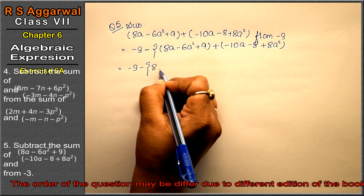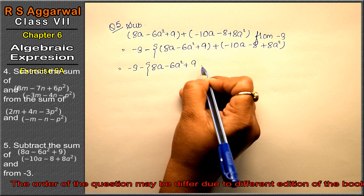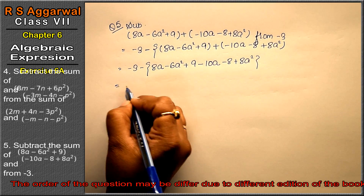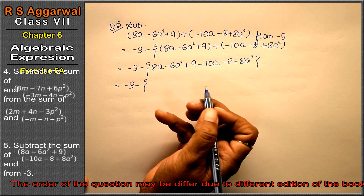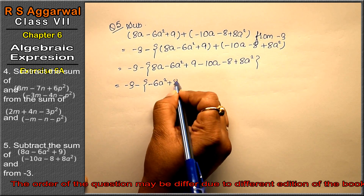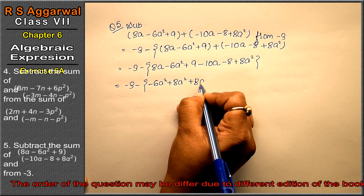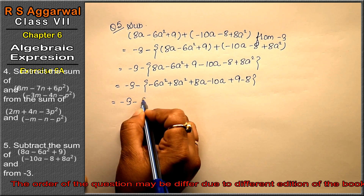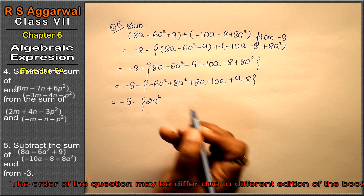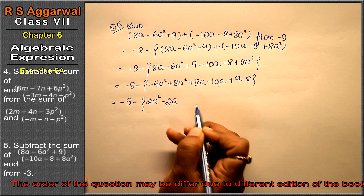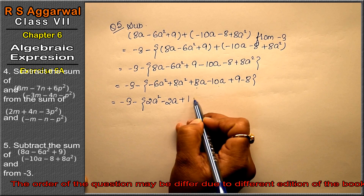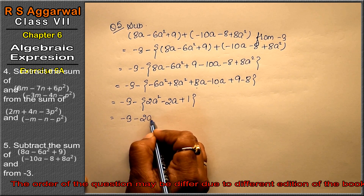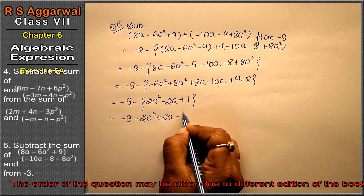Opening the bracket inside: 8a minus 6a² plus 9, then plus bracket minus 10a minus 8 plus 8a². For now I'm solving inside first without fully opening the outer bracket. Grouping: a² terms: minus 6a² plus 8a²; a terms: 8a minus 10a; constants: plus 9 minus 8. We get minus 3 minus, and opposite signs so subtract, taking the sign of the larger.